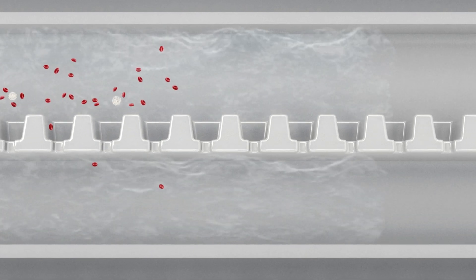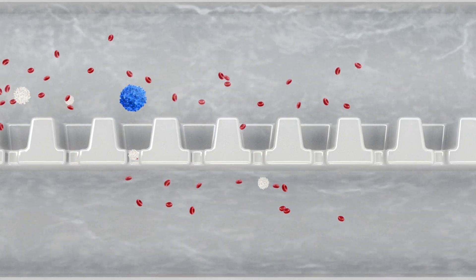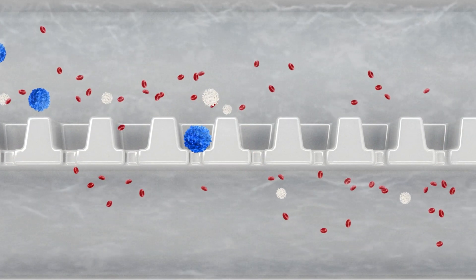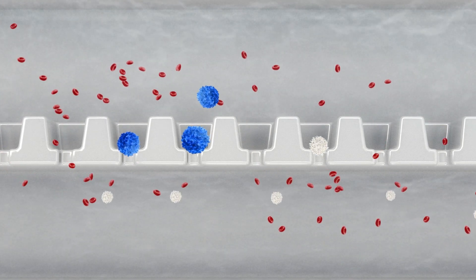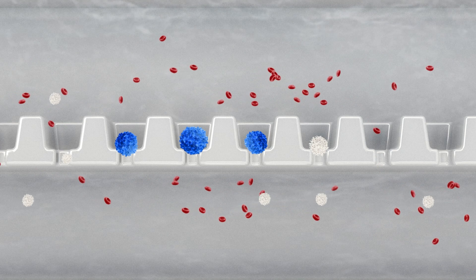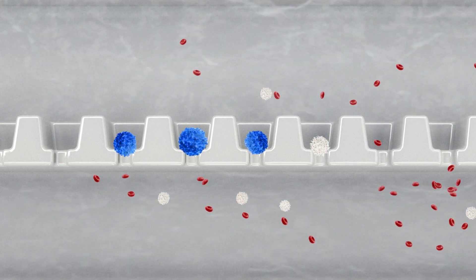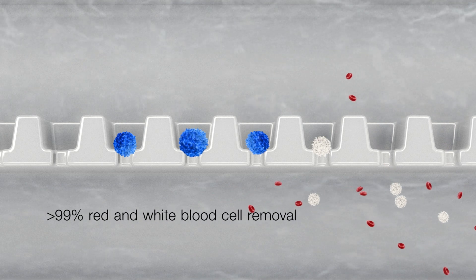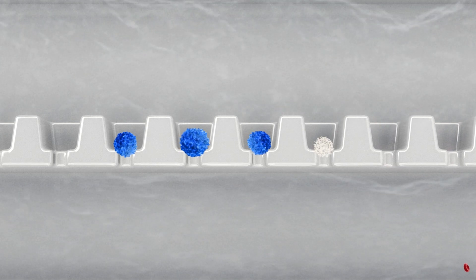CellSelect slides are compatible with epithelial and mesenchymal CTCs from any liquid biopsy samples, with little to no preparation. As the sample flows through the slide, individual CTCs are captured in the microchambers, while red and white blood cells and other material flow through them. This method removes greater than 99% of red and white blood cells, while preserving the integrity of the cells of interest.